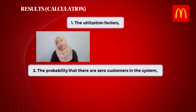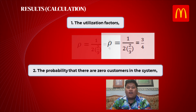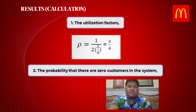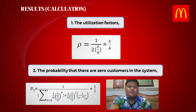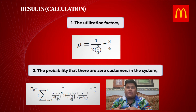For the first calculation, we find the utilization factor using the formula P equals lambda over the number of servers times mu, and we get three over four (0.75). For the second question, we find the probability that there are zero customers in the system, P0. After inserting the formula, we calculate that the probability of zero customers in the system is one over seven.